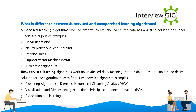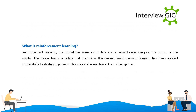Unsupervised learning algorithms work on unlabeled data, meaning that the data does not contain the desired solution for the algorithm to learn from. Unsupervised algorithm examples include clustering algorithms such as K-means and hierarchical clustering analysis (HCA), visualization and dimensionality reduction, principal component analysis (PCA), and association rule learning.